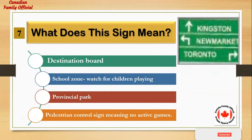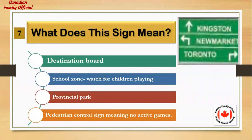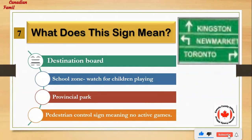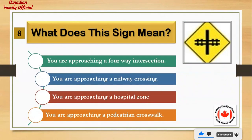What does this sign mean? Number 1: destination board. Number 2: school zone, watch for children playing. Number 3: provincial park. Number 4: pedestrian control sign meaning no active games. And the answer is: destination board.